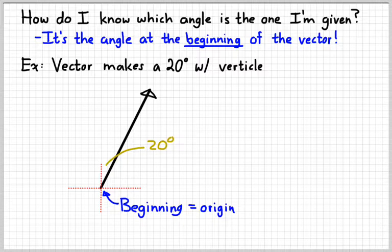So sometimes what I'll see happen is a student will try to draw the components, and they'll draw them something like that, and then they'll try to make this angle be the 20 degree angle. Usually the thing that they're doing that confuses them is they forget to draw the arrowheads on the vectors. If you remember to do that, then you won't get confused, because you'll always remember that the angle that's given to you is relative to the beginning of the vector.